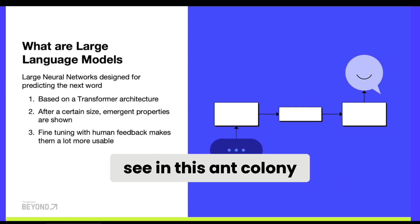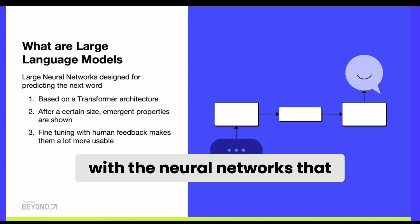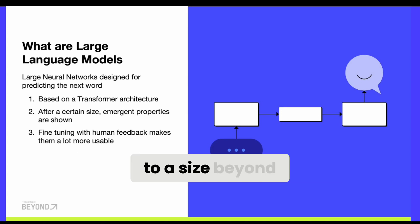There's a similar thing going on with neural networks. When you grow them to a size beyond, let's say, 10 to 100 billion parameters, they start showing properties of reasoning and things like that, which is what has made them so interesting and why everyone is so excited.